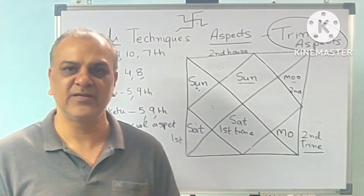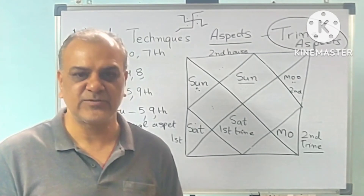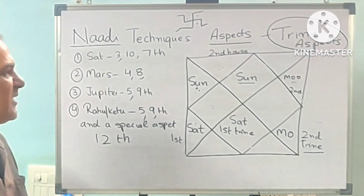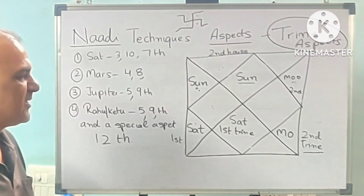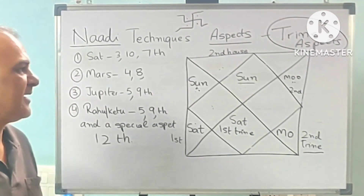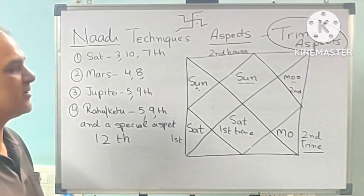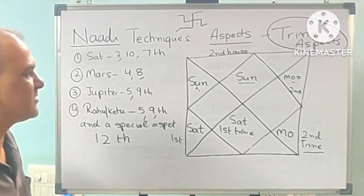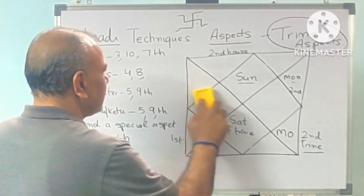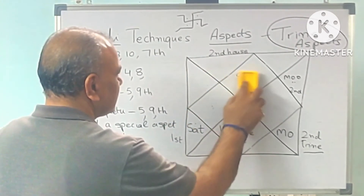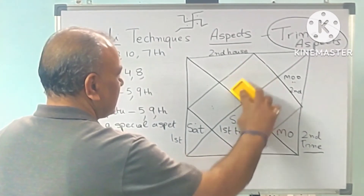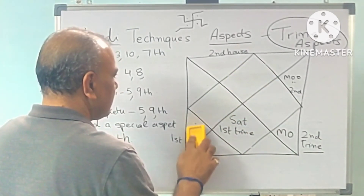To summarize what we have covered: first, conventional aspects similar to Vedic concepts, with the key difference that Rahu has the 12th aspect — very important. All other planets have the 7th aspect plus their special aspects. The trine aspects I have already explained. If you have any confusion you can WhatsApp me or call me so I can clear your doubts.